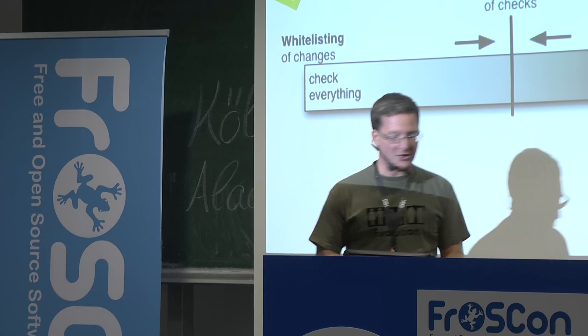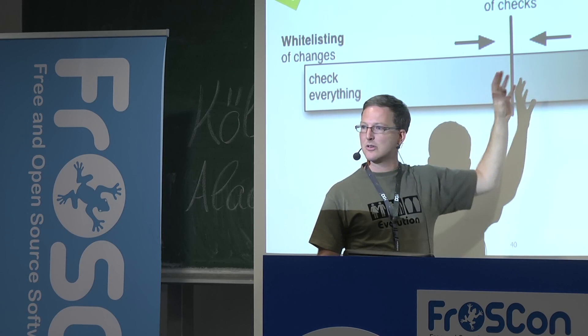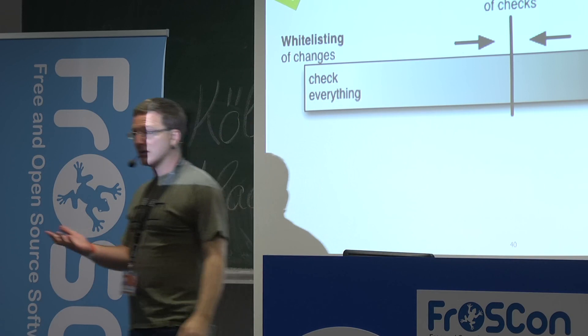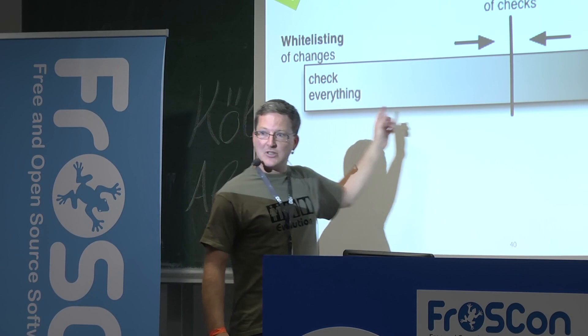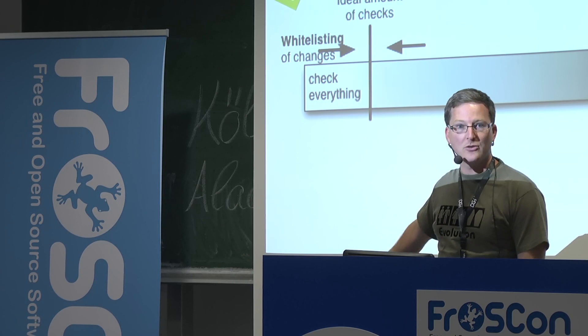With blacklisting you specify individual checks; with whitelisting you specify things to ignore. With git you have a gitignore file — you don't version control log files or class files. The ideal is not in the middle but somewhere where you check more than you ignore. Usually you want to check more than you don't want to check, depending on your specific project.